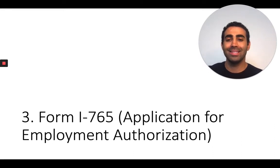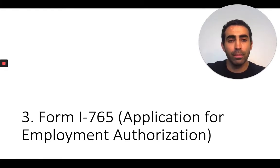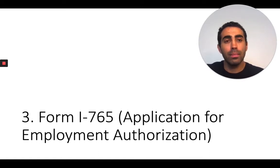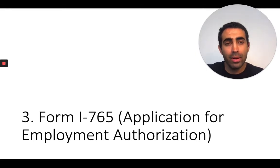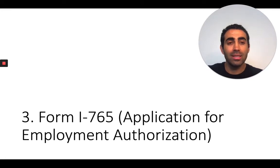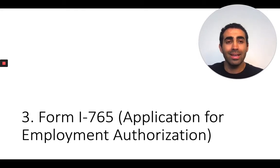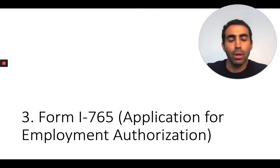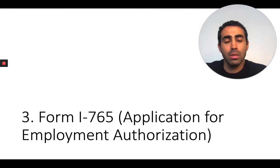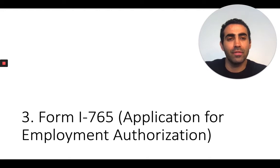Another form you should know about is the Form I-765. This is the application for employment authorization. Once the fiancé enters the United States, they're eligible to apply for employment authorization. And once the couple gets married and the fiancé files their application to adjust status, the fiancé is also eligible to apply for employment authorization again. Employment authorization is very important — it's the authorization to work in the United States — and in order to apply for it, you need to file the Form I-765.